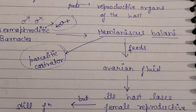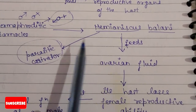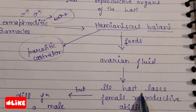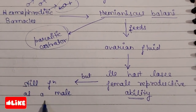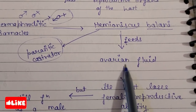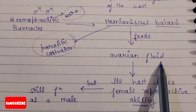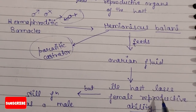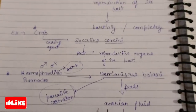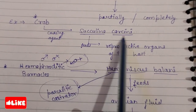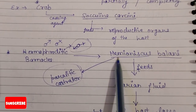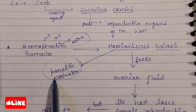Since the barnacle was hermaphroditic — having both male and female characters — Hemioniscus balani, by eating only the ovarian fluid, destroys the female reproductive ability of the host. However, the male reproductive organs remain still functional, as Hemioniscus balani has no effect on them. So the female reproductive ability is lost while the male reproductive ability remains functional.